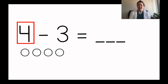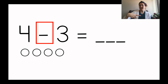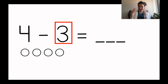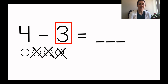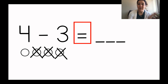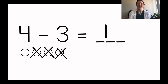I drew four circles because we're starting with four. What do we need to do next? It says minus, and minus means we're going to cross them off. How many will we cross off? Three. Cross off three circles on your paper: one, two, three. How many are left? I see one. Four minus three equals one.